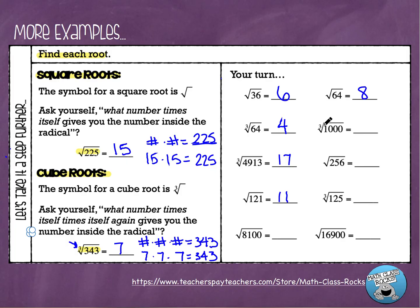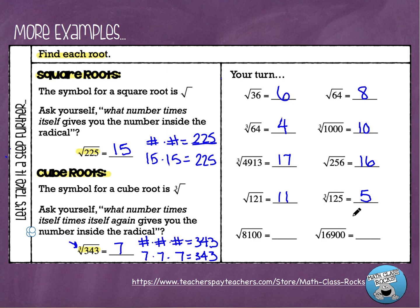The square root of 64 is 8. Always look for that little 3 — the cube root of 1,000 is 10, because 10 times 10 is 100, times 10 again is 1,000. The square root of 256 is 16, since 16 times 16 is 256. The cube root of 125 is 5, because 5 times 5 is 25, and 25 times 5 is 125.